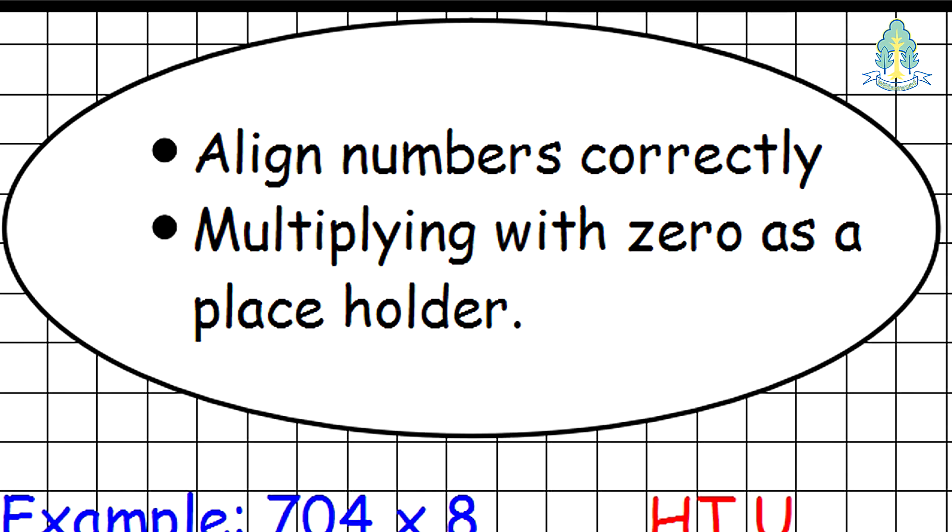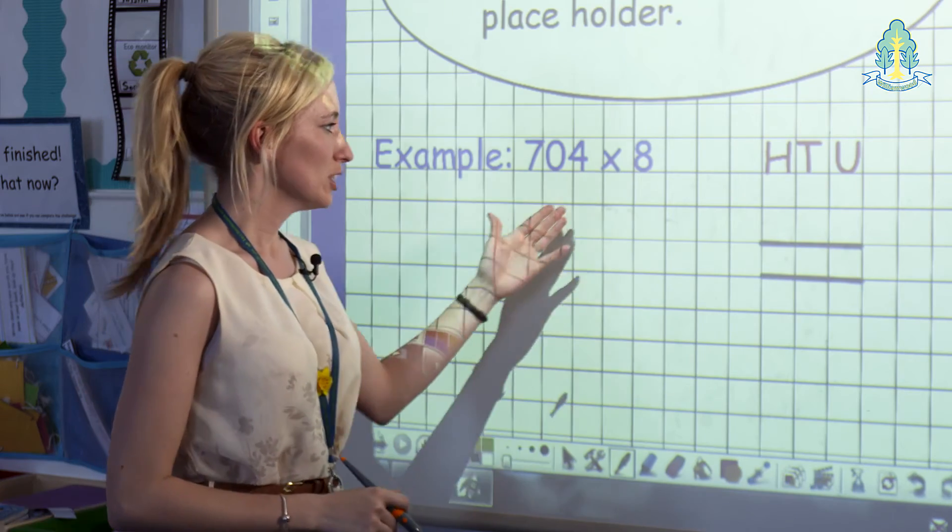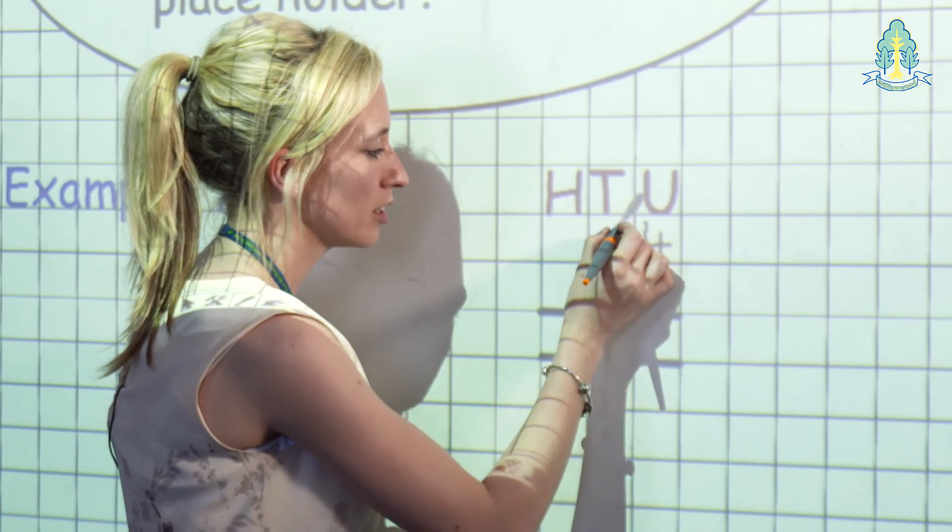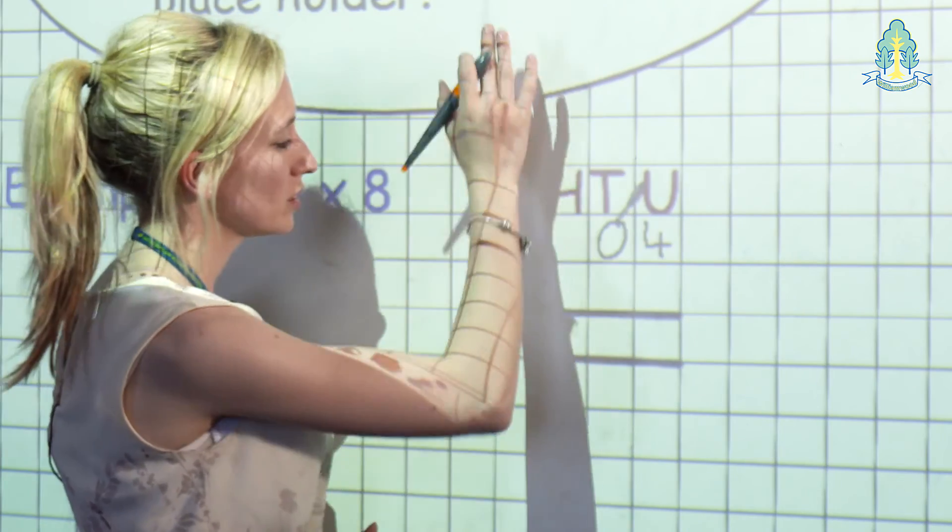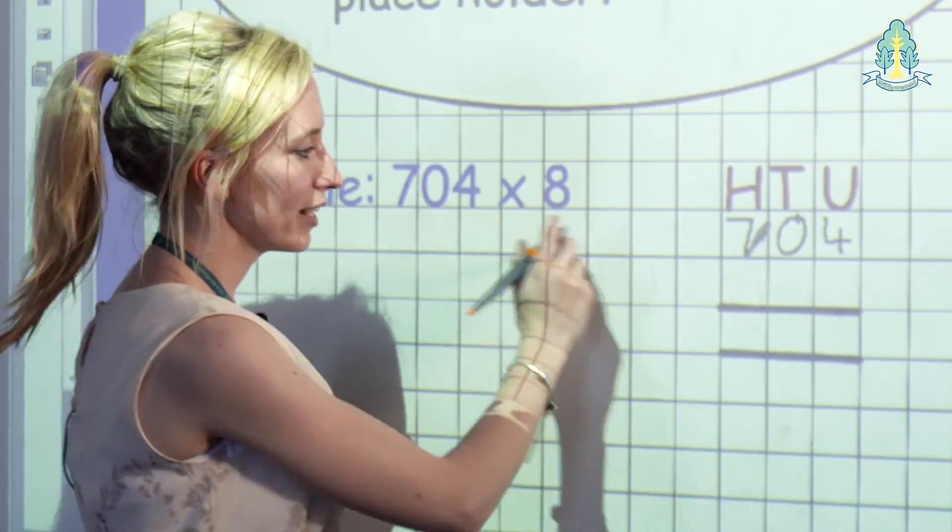Another example children may come across is where 0 is used as a placeholder. For this example we have 704 multiplied by 8. So we are putting our 4 into the units column. There is nothing in the tens, so we are putting in a 0 as a placeholder and a 7 for our hundreds. We are multiplying this by 8, so keeping our multiplication sign out of their calculation.